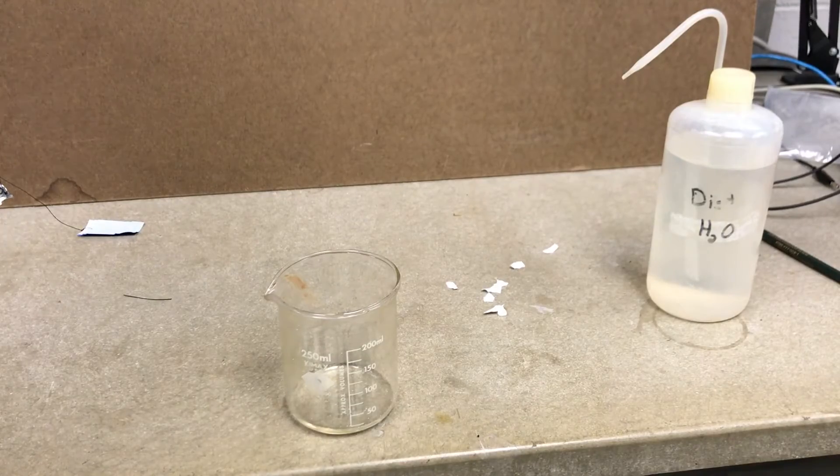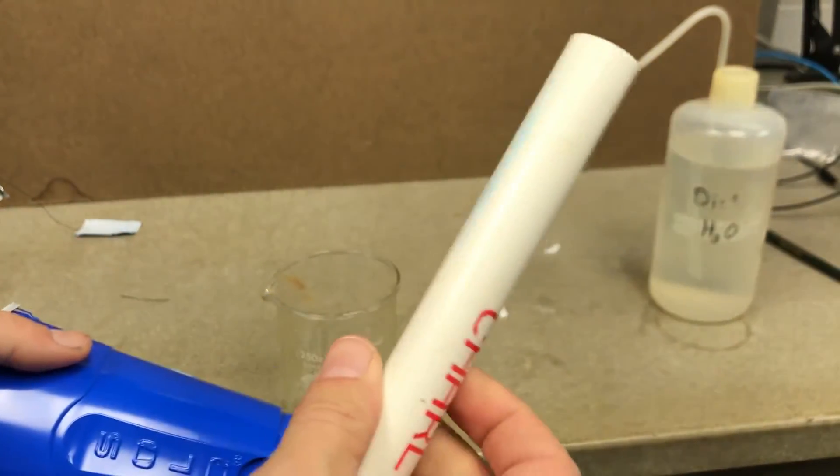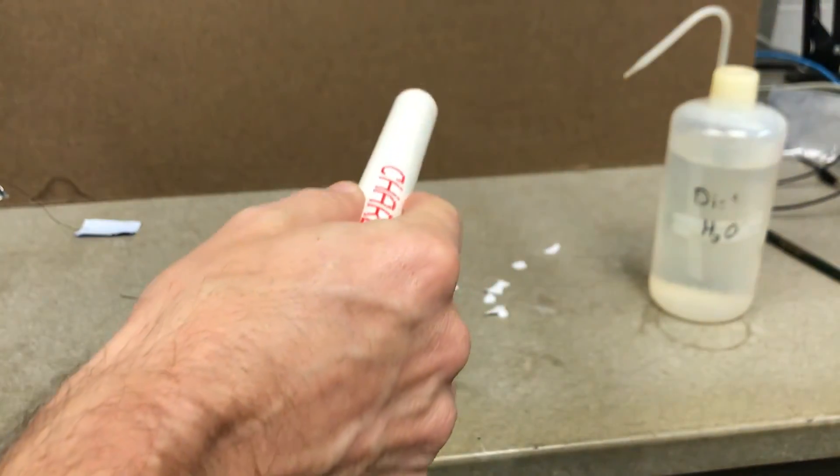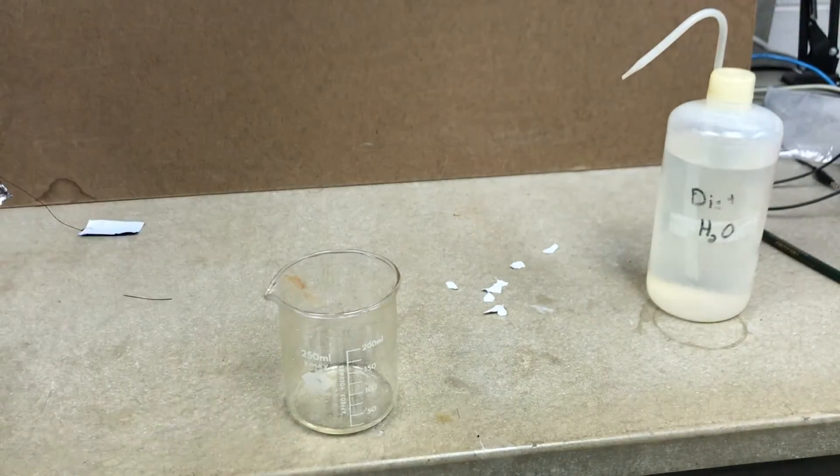You can take something like this, a plastic, a PVC and rub it with plastic. That actually works pretty well. Hold it near a stream of water. You want the stream to be very, very thin and smooth, and you can get it to bend like that.